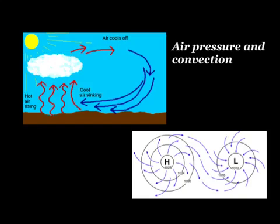Energy comes from the sun to the earth and heats the earth through radiation, or radiant energy. As the earth heats, the air in contact with the earth is heated through conduction. As the air warms, it becomes less dense — the particles or molecules in the air being warmed become less dense, and that less dense material rises.